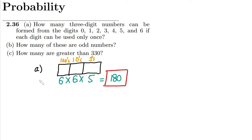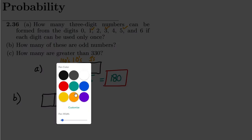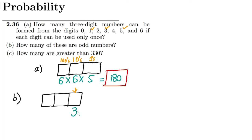That is the solution for part A. Now moving to part B, we have to find how many of these are odd. Considering the three-digit number again, I need to see how many of these 180 combinations are odd numbers. Starting from the units location, the digits I can use to make the number odd are 1, 3, and 5 — so I have only 3 options here.